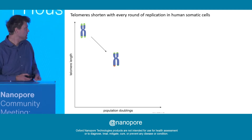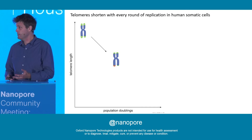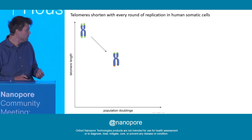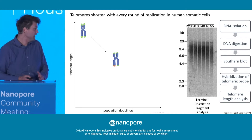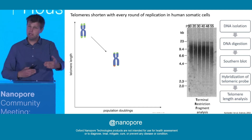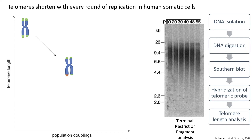For human somatic cells, telomeres shorten with every round of DNA replication due to the end replication problem and subsequent processing. We can visualize and measure telomere lengths by a variety of techniques, including terminal restriction fragment analysis. For this technique, you isolate high molecular weight genomic DNA, digest with enzymes that cut frequently outside the telomeric TTAGGG motif, separate fragments on an agarose gel, perform a Southern blot, and probe with a telomere-specific probe. The result is telomeric smears, shown here for human primary fibroblasts at different population doublings, demonstrating that telomere length decreases with increasing cellular age.